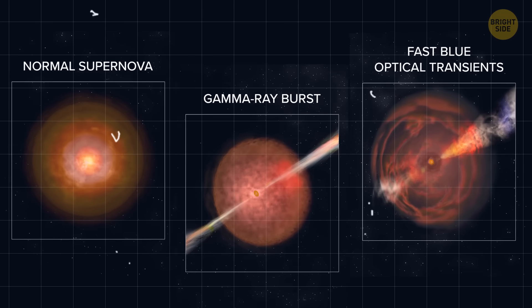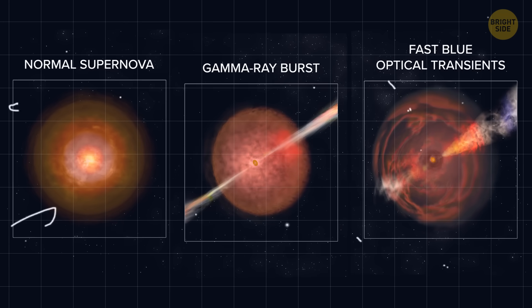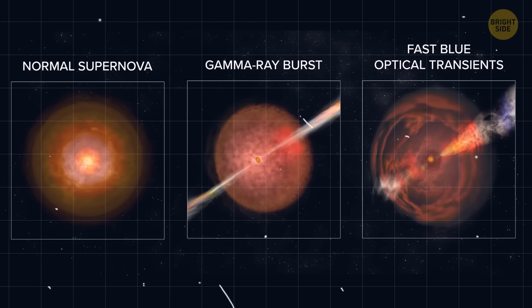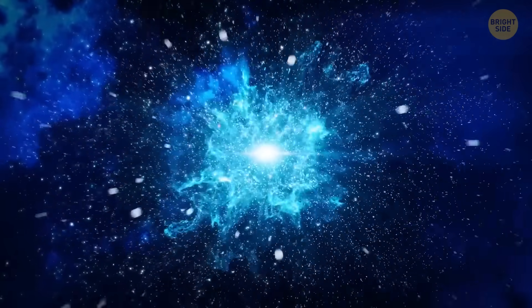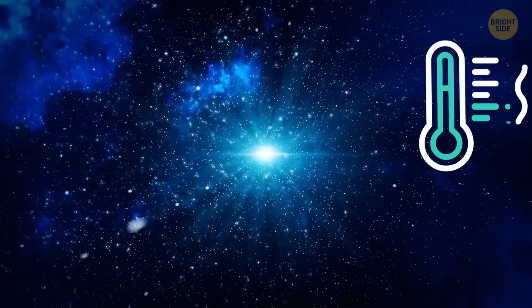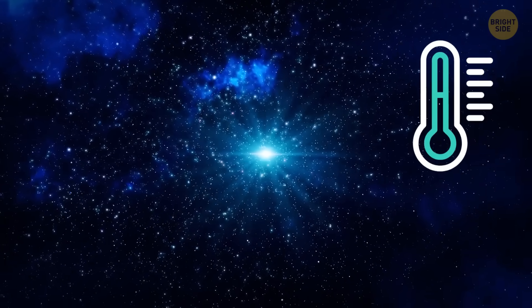Fast blue optical transients do look like supernova explosions, but they are much faster. They flare up and fade away much more quickly than regular supernovae. They're also much hotter, which makes the light seem bluer compared to other supernovae.